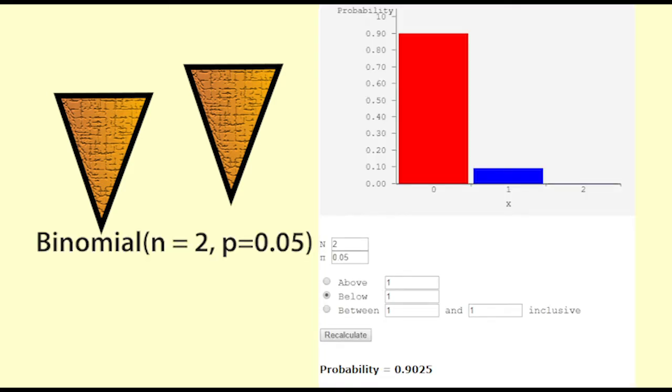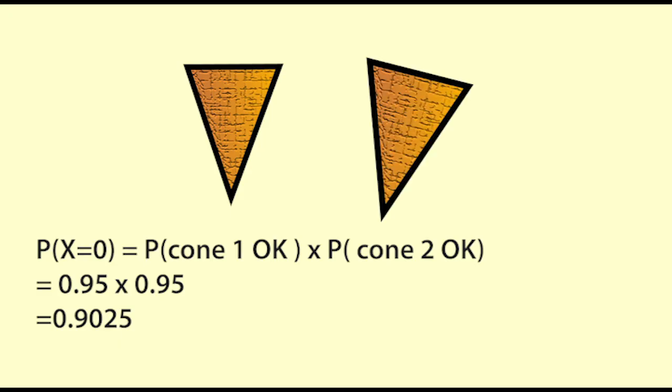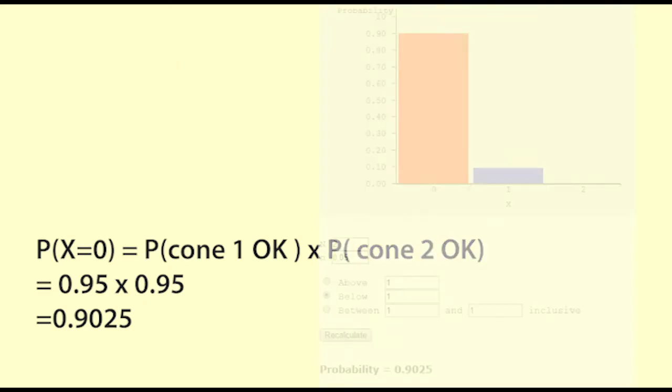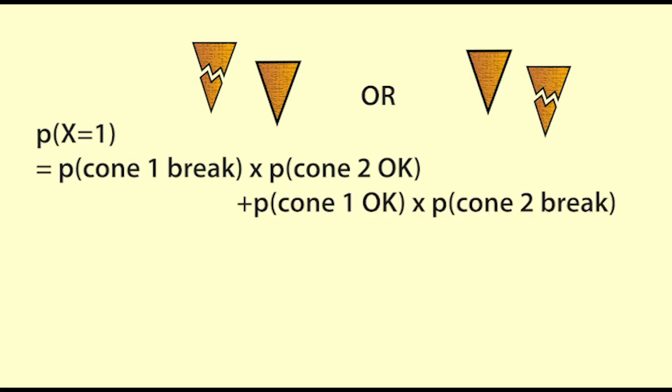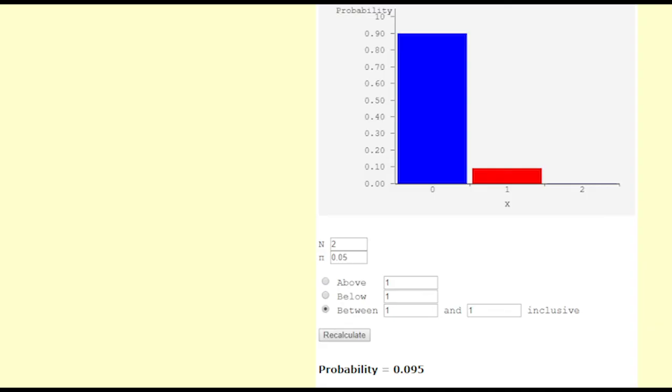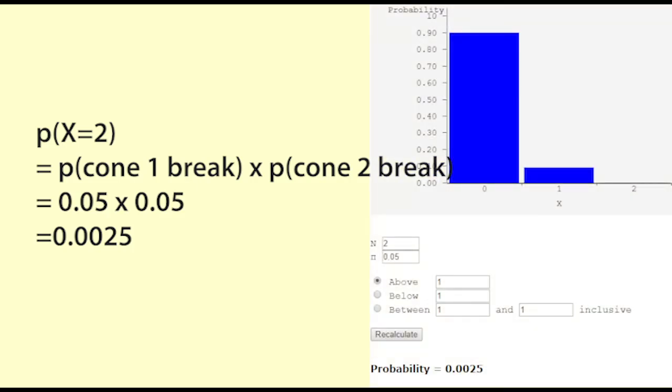But what about if there were two cones? Here is the distribution for binomial n equals 2, p equals 0.05. The most likely thing to happen is that no cones break. The probability for zero breakages is the probability that cone 1 doesn't break, which is 0.95, and cone 2 doesn't break, which is also 0.95. The combined probability is 0.95 times 0.95, which is 0.9025. The probability of one of the two cones breaking is the probability of the first one breaking and the second one staying whole, or the first one staying whole and the second one breaking. That equals 0.05 times 0.95 plus 0.95 times 0.05, which comes to 0.095. Is it possible for both cones to break? Yes, but it's very unlikely. 0.05 times 0.05 equals 0.0025.